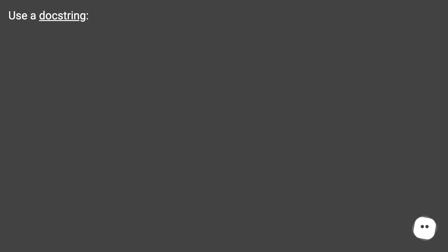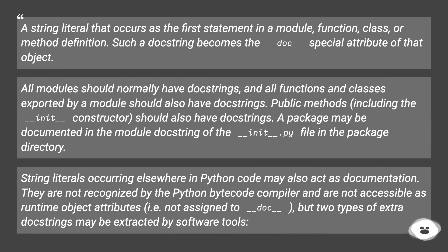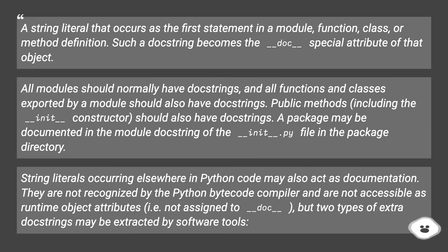Use a doc string: a string literal that occurs as the first statement in a module, function, class, or method definition. Such a doc string becomes the __doc__ special attribute of that object. All modules should normally have doc strings, and all functions and classes exported by a module should also have doc strings. Public methods, including the __init__ constructor, should also have doc strings.